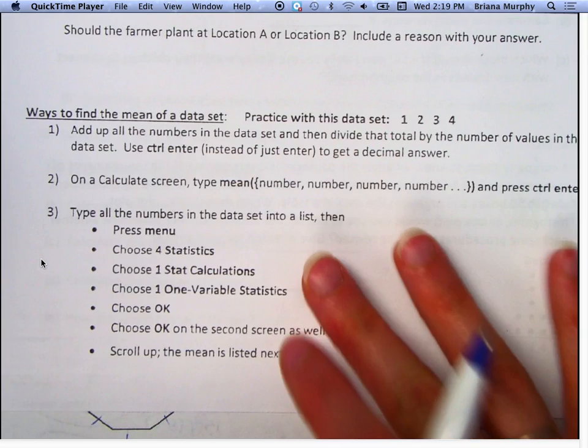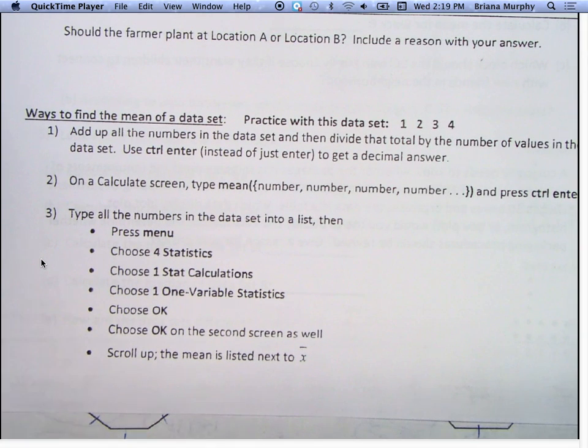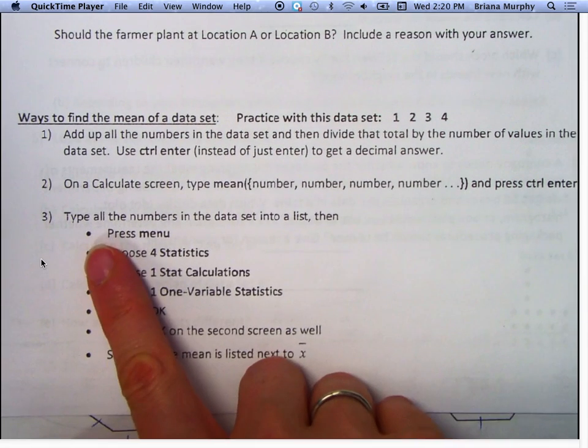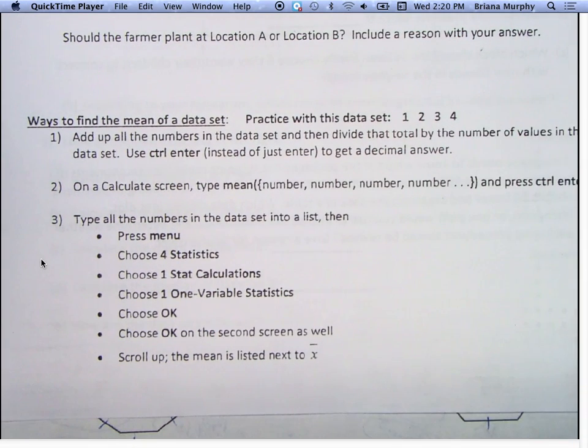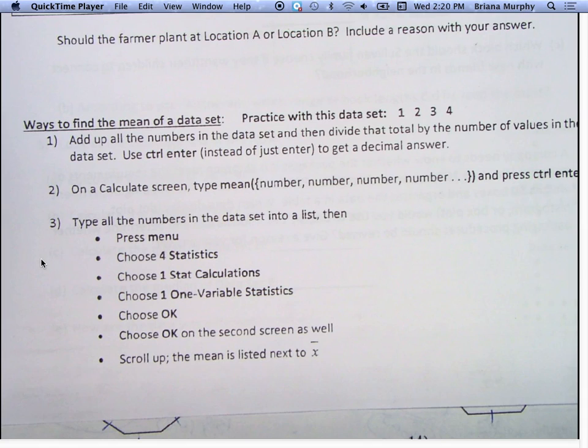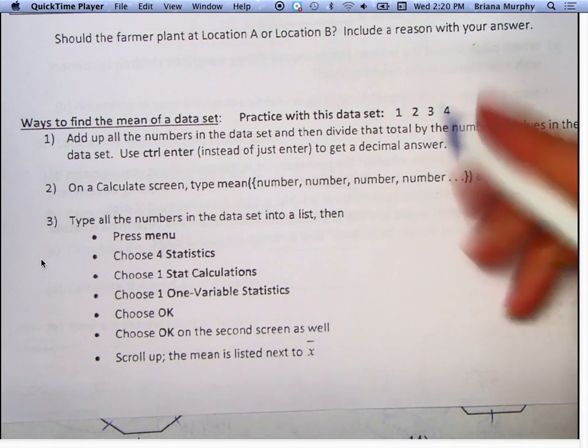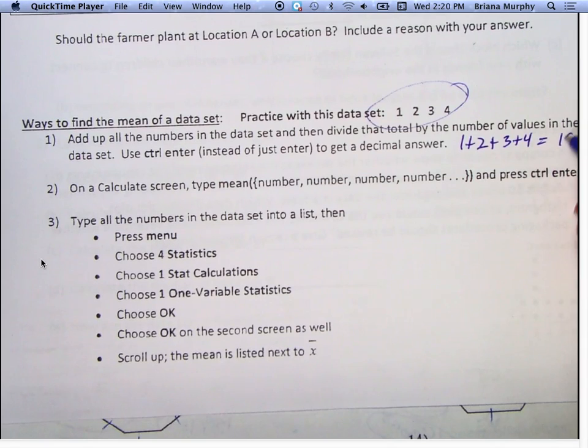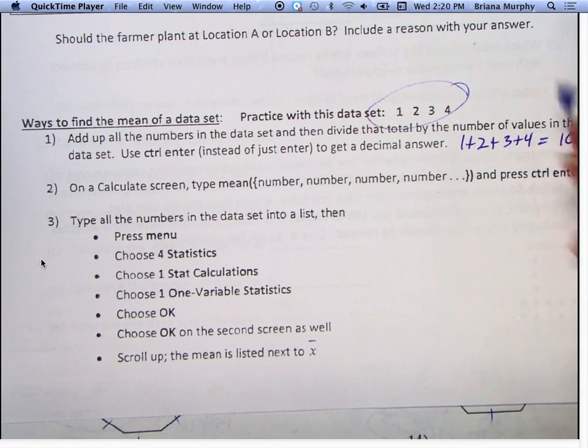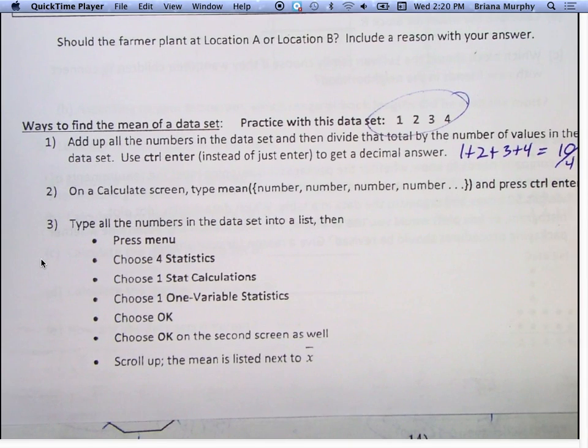We're looking right here and we're going to use this data to practice finding different ways of finding the mean. First we're going to practice with this data set: 1, 2, 3, 4. We're going to add up all the numbers in the data set and then divide by the total numbers. So we're going to say 1 plus 2 plus 3 plus 4, and how many are there? Four. So we're going to divide it by 4, and I get 2.5 as my answer. That's my mean.